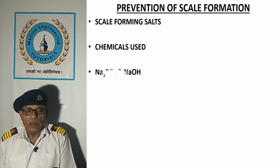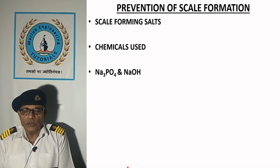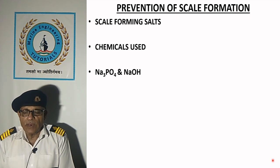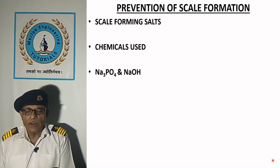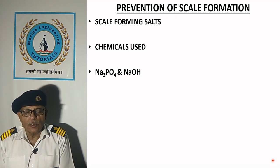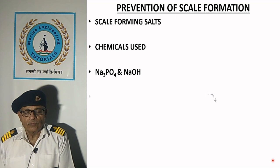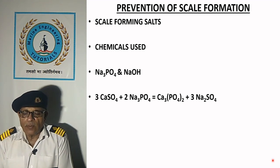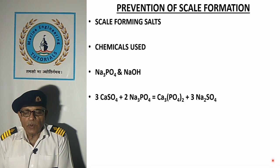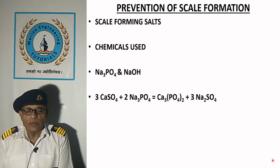Trisodium phosphate is used and helps in precipitating scale-forming salts into sludge. It also provides alkalinity. Any shortfall of alkalinity is made up by use of caustic soda. Phosphate reacts with the scale-forming salts, and sodium sulfate formed in the reaction is highly soluble in water, whereas calcium phosphate is precipitated which can be removed by blowdown.